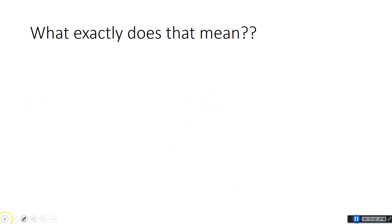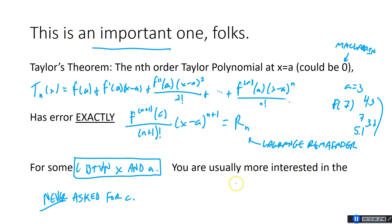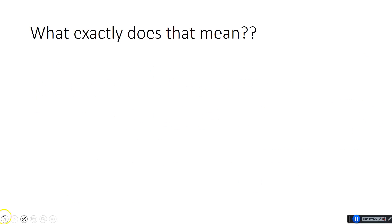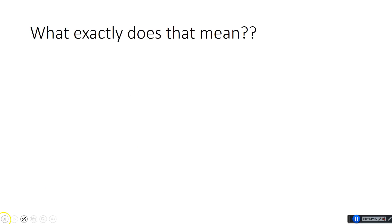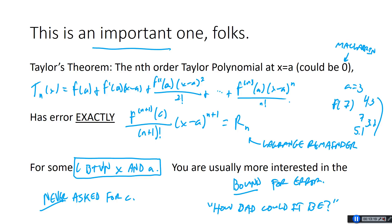What you are usually more interested in is the bound for the error — you don't really care what the exact error is; you worry about how bad could it be. Usually it's one of the two endpoints: if you plug one of the two endpoints into the (n+1)st derivative, it'll be the biggest possible value. You're really interested in: if I stop at this point, what's the worst the error could be? Generally you want that to be small, so you go off to enough terms that your error is as small as you want.